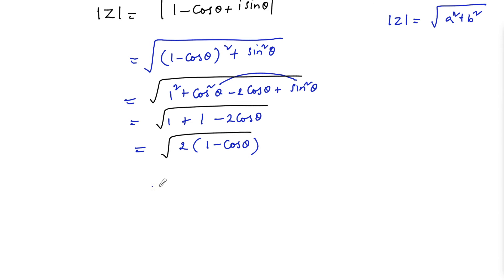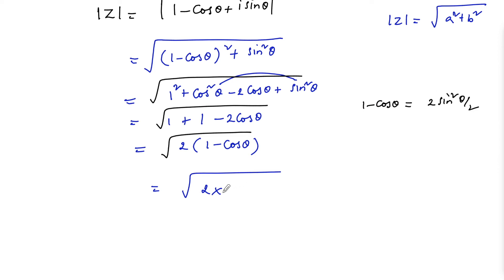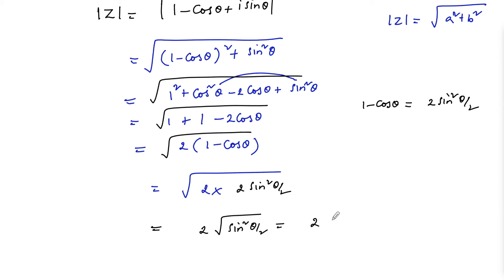This is equal to square root of 2 times, and we know that 1 minus cos theta is equal to 2 sine squared theta by 2. So we can write 2 sine squared theta by 2. Which is equal to square root of 4 — that is 2 — and root over sine squared theta, which we can write as 2 times mod of sin theta by 2, since square root of x squared is equal to mod x.